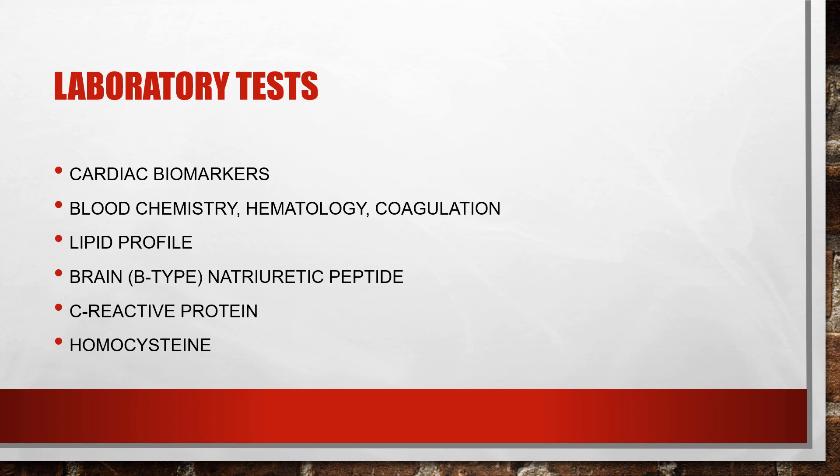Homocysteine is an amino acid linked to cardiovascular disease, because too much of it can damage the lining of the arteries and promote blood clot formation. Lipid profiles check a patient's HDL, LDL, and triglyceride counts — all fats and cholesterol in the blood that put a person at risk for cardiovascular disease. Other labs include blood chemistry such as electrolytes and kidney function, a CBC, and coagulation studies like PT/INR and PTT.